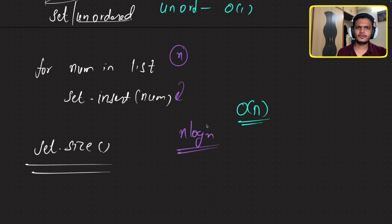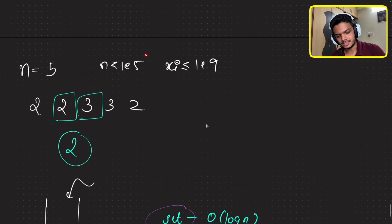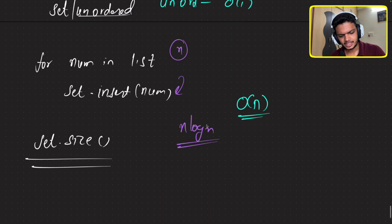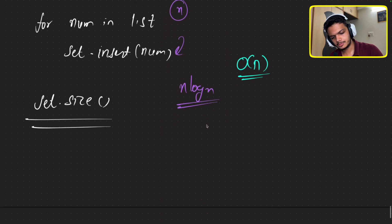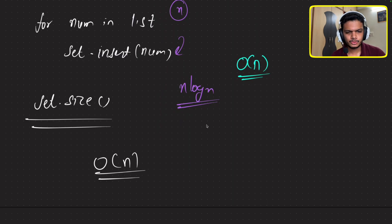Do you have any other approach? The question is done with the set approaches, and both fit within the time constraints since n is as high as 1e5 — anything less than n² works. Both approaches use O(n) extra space in the worst case, because if all elements are unique you store all of them in the set.